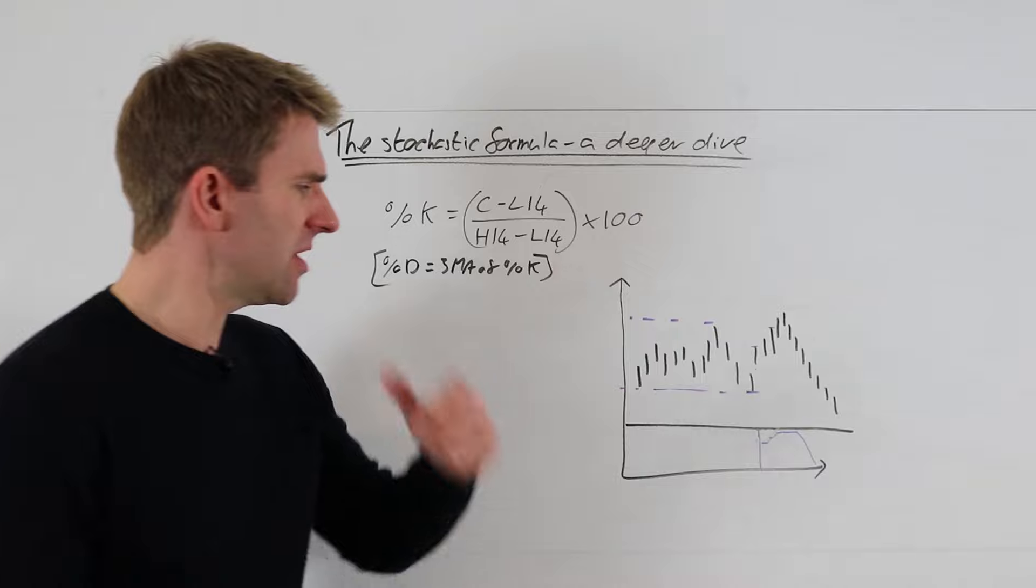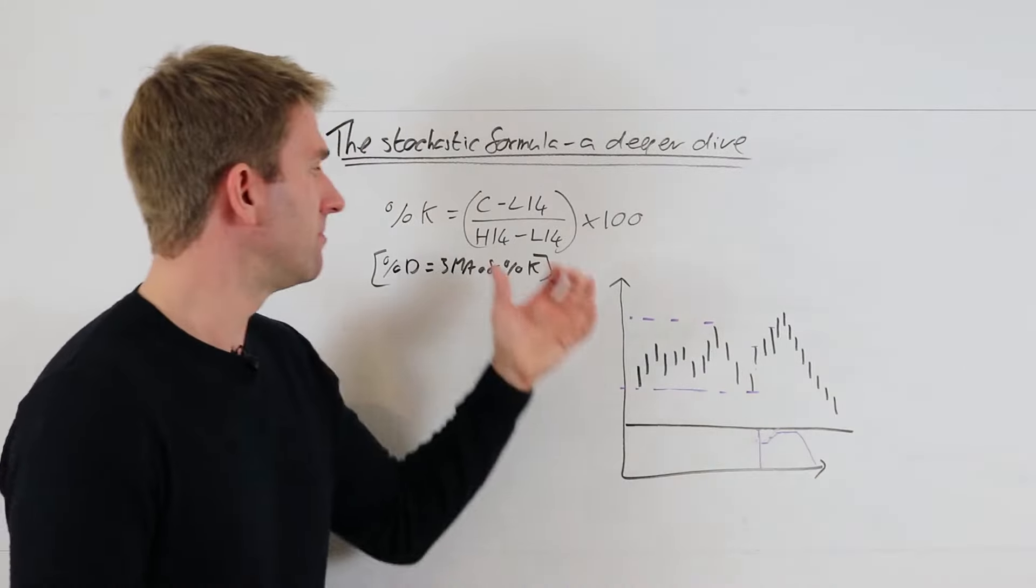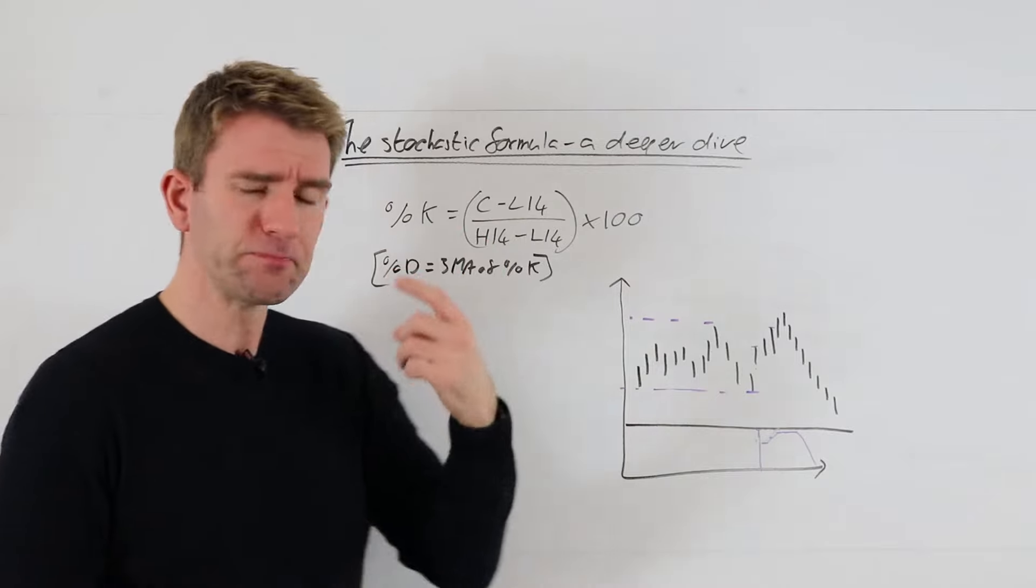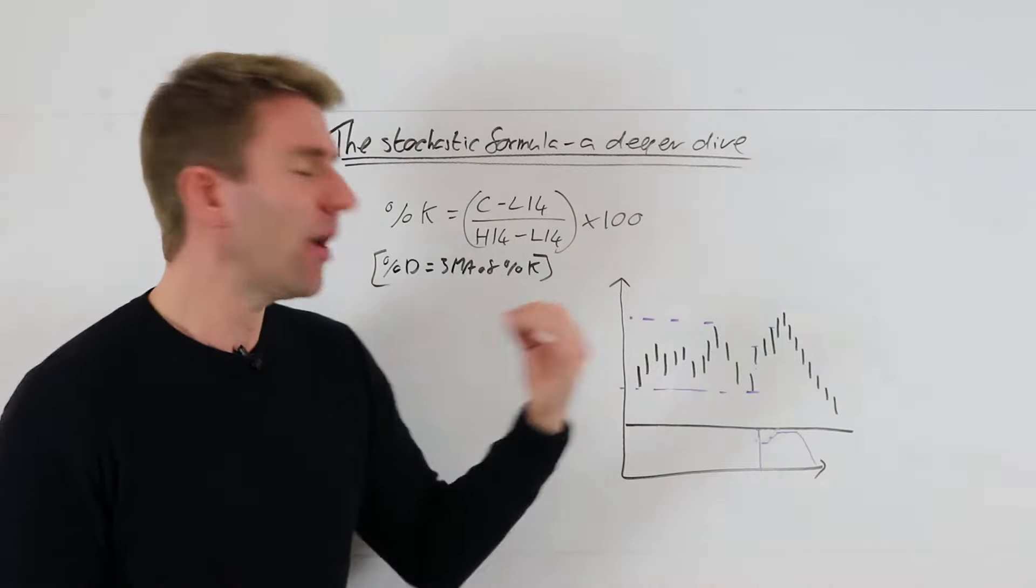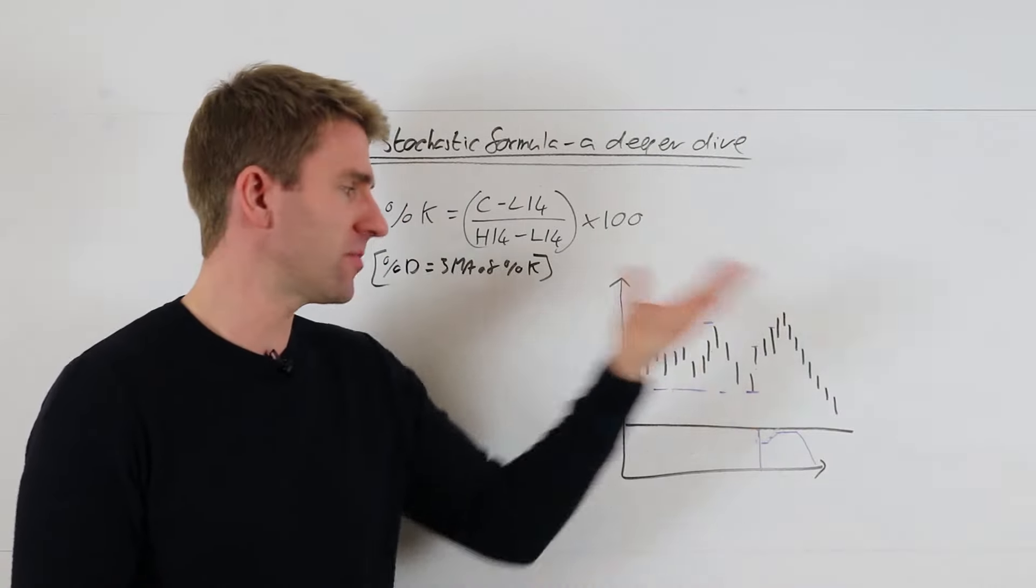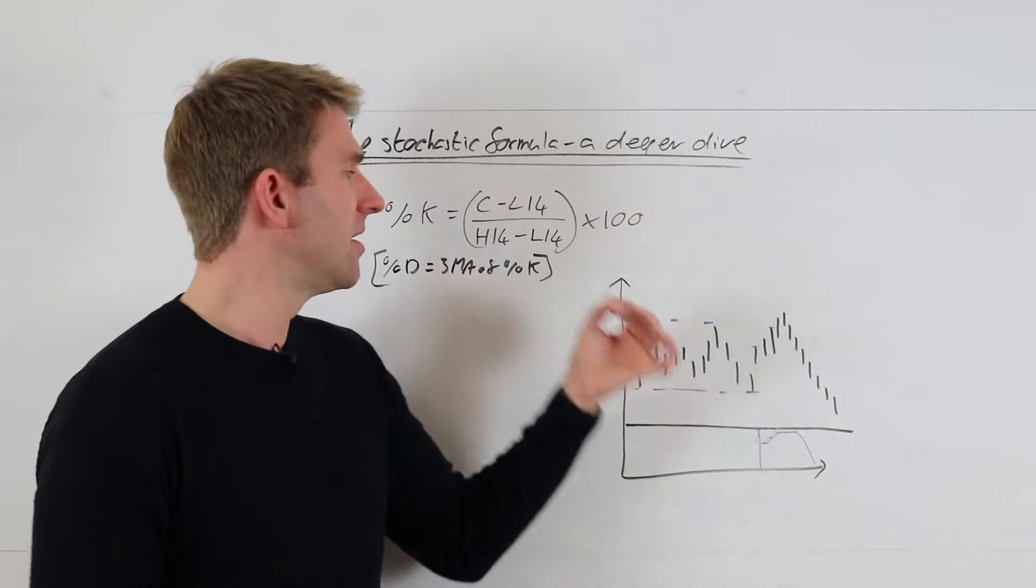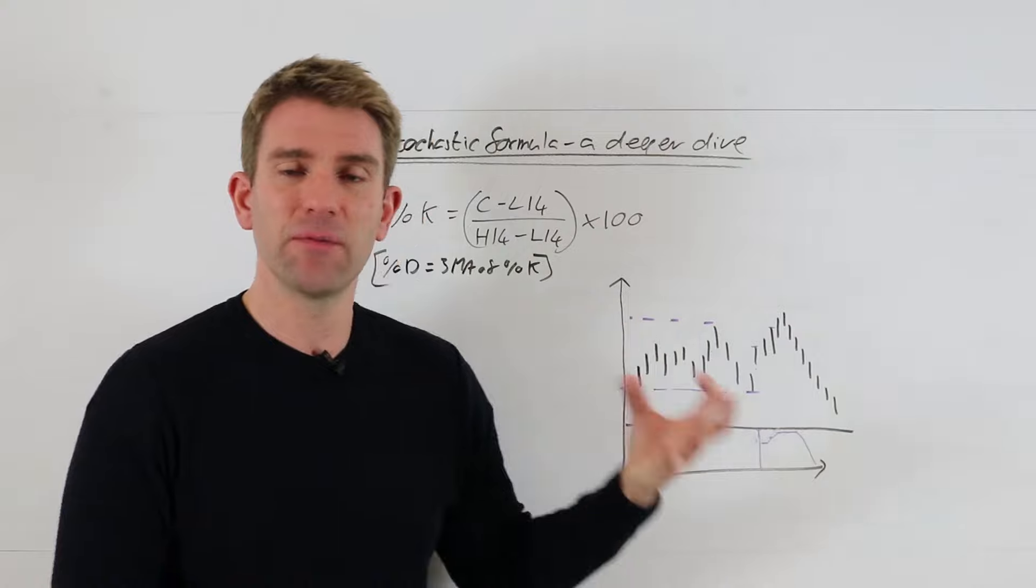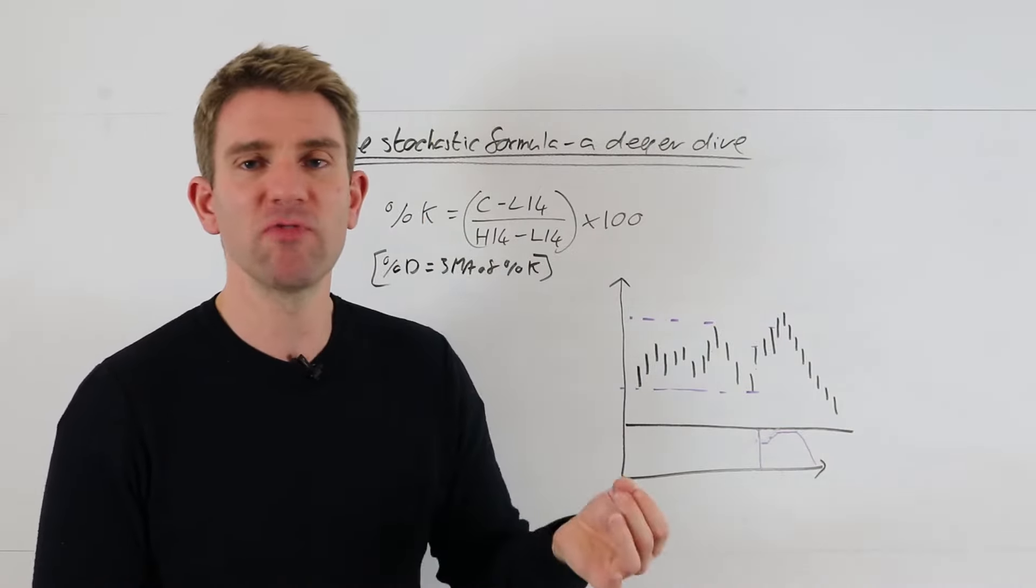So guys, not to go into massive depth with this, but I really wanted to look at the formula for number one, and number two let's think about how this actually affects our signals. If we're using something like a stochastic, or could be any kind of indicator out there, but understanding what the formula does and how it affects different markets.